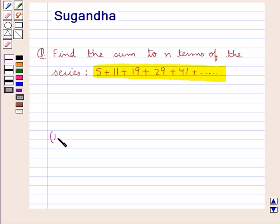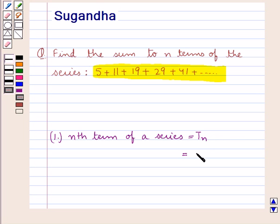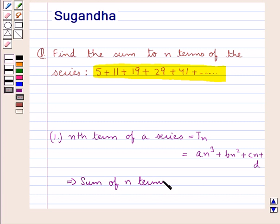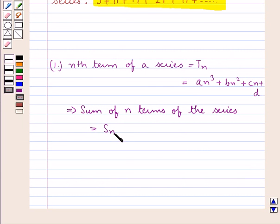Before moving on to the solution, let's discuss one very important theorem which says that if the nth term of a series is given by Tn equal to An³ plus Bn² plus Cn plus D, then the sum of the n terms of the series given by Sn would be equal to A times summation n³ plus B times summation n² plus C times summation n plus D times n.